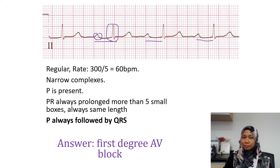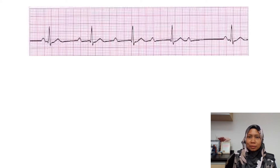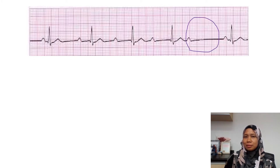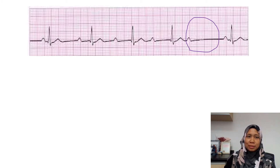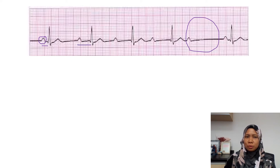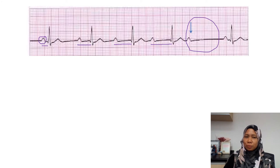So now let's go to the next one. Here we can see that it is regular, but suddenly there is no QRS complex — this is what we call a missed beat. So we can see it is a regular rhythm with narrow complexes. We look at the P wave — the P wave is normal in shape. Then we look at the PR interval. The PR interval is prolonged, then it becomes more prolonged, and then very prolonged, and suddenly it stops — there is no QRS conducted. So this is what we call the Wenckebach phenomenon.